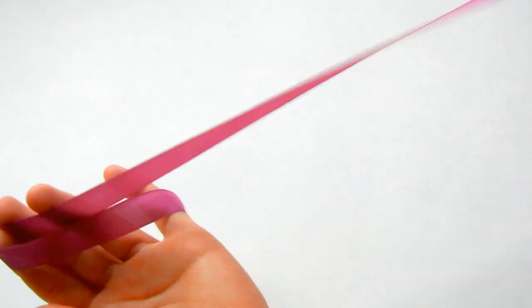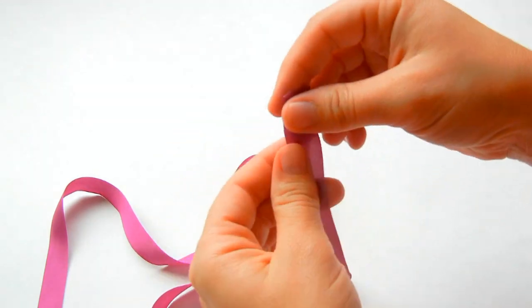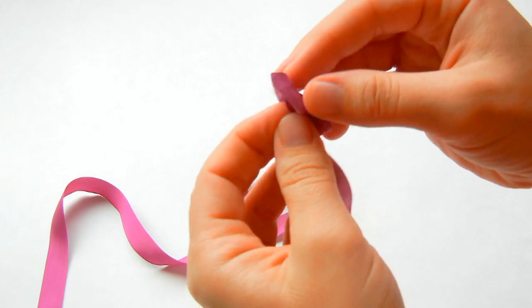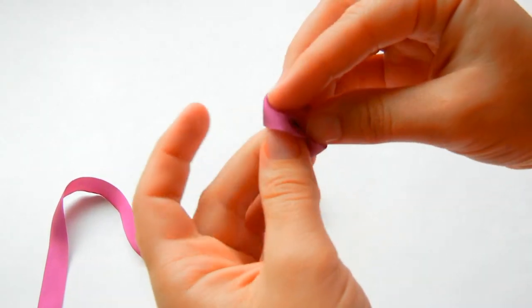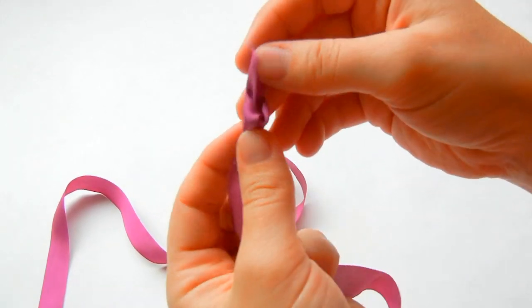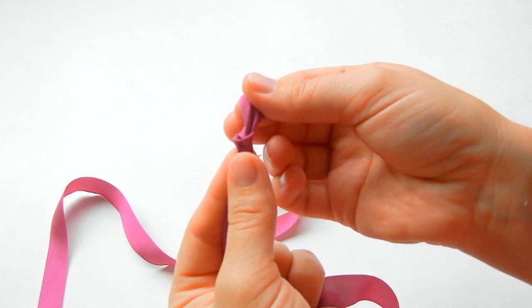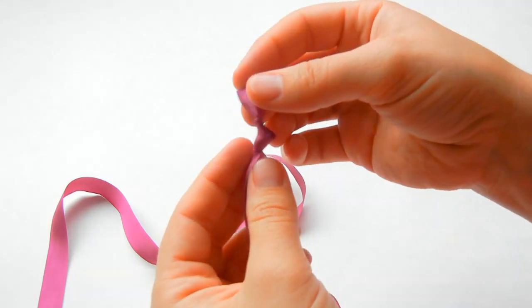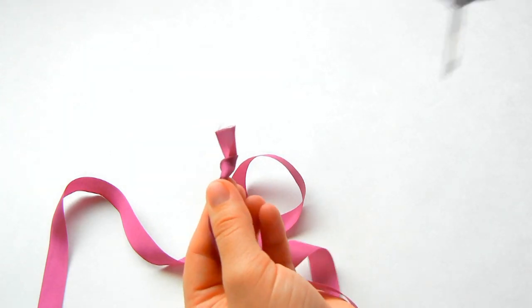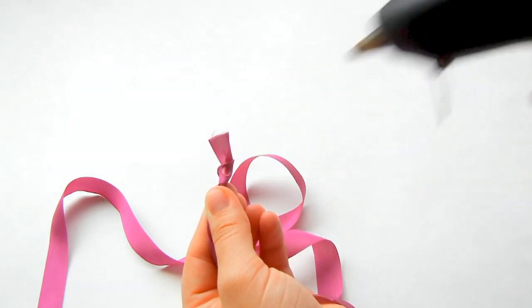Go ahead and just cut a piece of ribbon. The longer the ribbon, the bigger the flower. Then take one end and make a knot, keeping the knot pretty close to the end of the ribbon. Take a dab of hot glue and put it on the back of your knot.